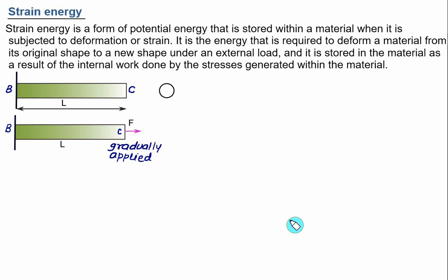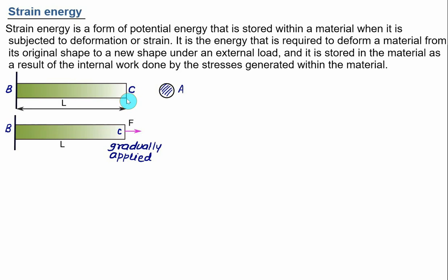To understand the concept of strain energy, we consider a bar BC of length equal to L with a uniform cross-sectional area A. This rod is attached at B to a fixed support and subjected at C to a slowly increasing load, called the gradually applied load. This axial load passes through the centroid of the given cross section.